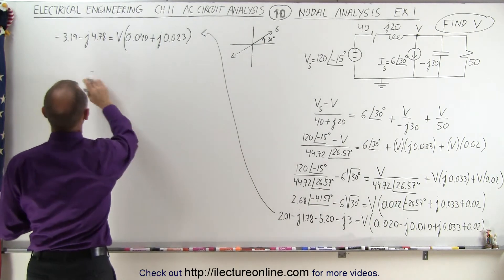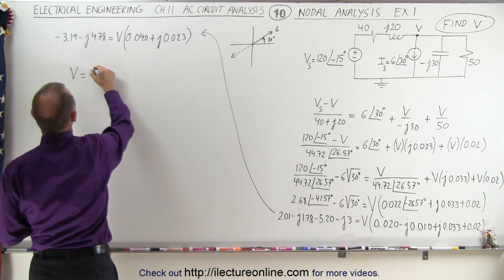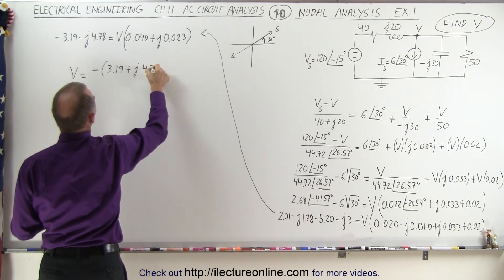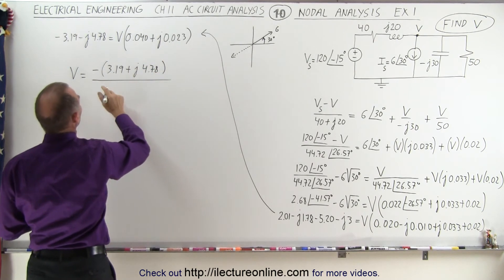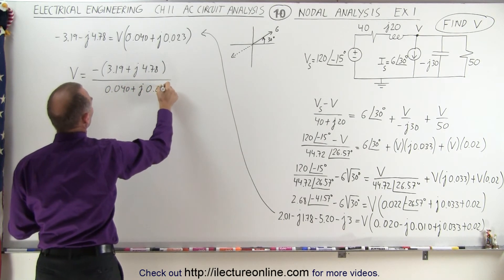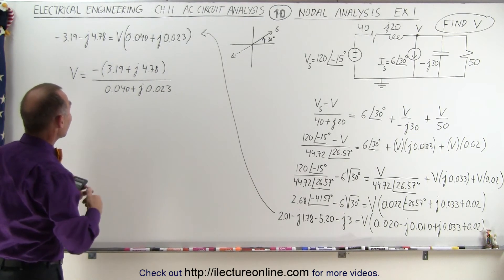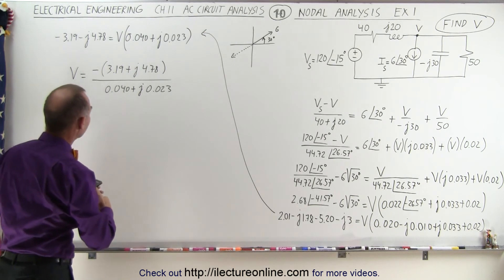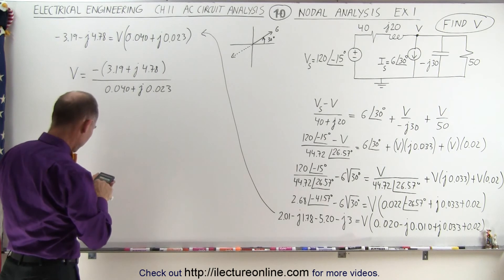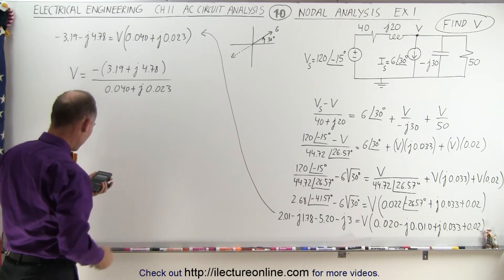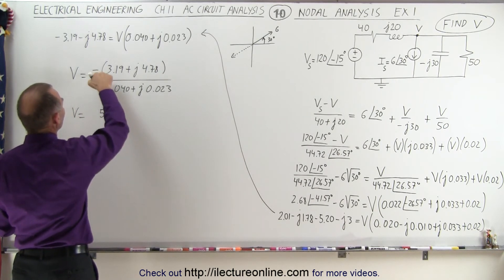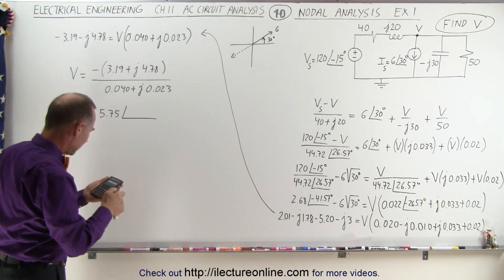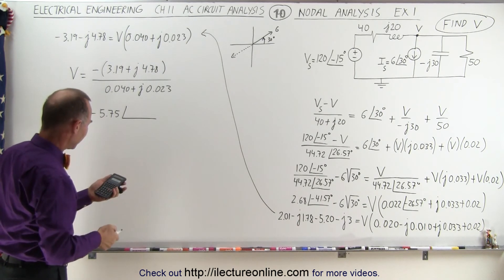So now we can easily solve for V. V is equal to the left side — taking the minus out, we get 3.19 plus J times 4.78 — divided by the denominator, 0.040 plus J 0.023. We're almost there — we reconvert back to magnitude and phase angle. In the numerator we get the square root of 3.19 squared plus 4.78 squared, which gives us 5.75, with a phase angle — inverse tangent of 4.78 divided by 3.19 gives us 56.28 degrees.